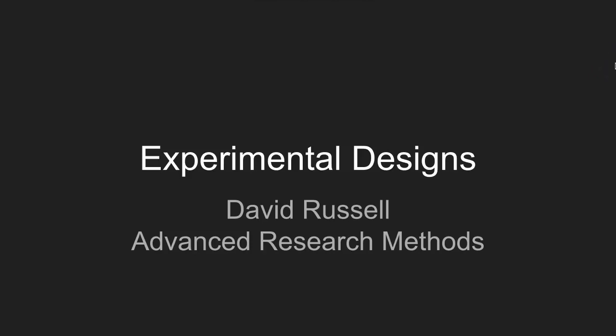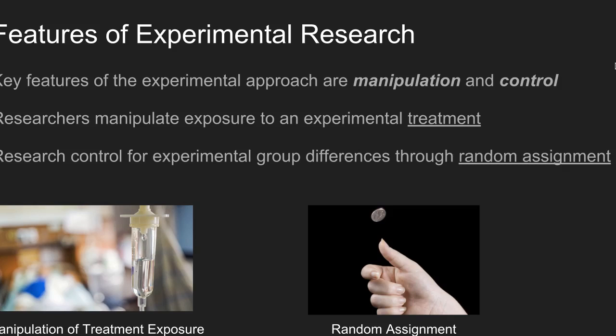In this lecture we'll talk about three types of experimental designs used in social research studies. There are two key features of experimental research: manipulation and control. Manipulation refers to the researcher's ability to control exposure to an experimental treatment. Control is achieved through random assignment into study groups, which allows the researcher to be confident that the experimental and control groups are similar, so any observed differences can be attributed to the treatment exposure.